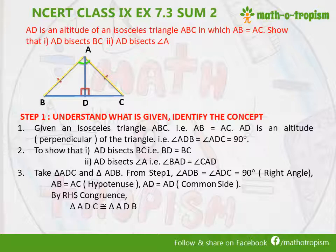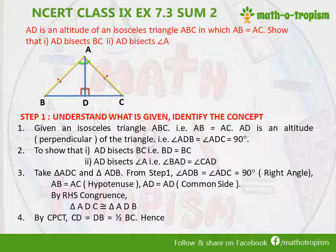Therefore, triangle ADC is congruent to triangle ADB. Once we have proven that these two are congruent, then by CPCT we can write that CD is equal to BD, which is equal to half of BC. Since both are equal, each is half of BC, and hence we can write that AD bisects BC into two equal halves.